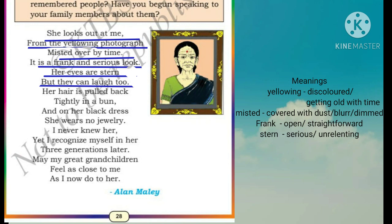'It is a frank and serious look.' Frank means straightforward — someone who is very honest, very open, very direct in speech is called frank. She has a frank and serious look. 'Her eyes are stern' means serious, unrelenting — they are very disciplined and look very serious. 'But they can laugh too' means they can be soft too.